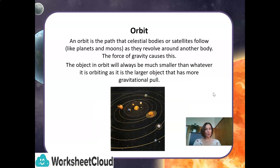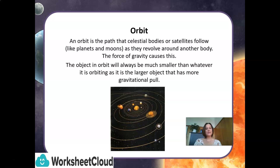What is an orbit? An orbit is the path that celestial bodies or satellites follow, like planets and moons, as they revolve around another body. The force of gravity causes this. The object in orbit will always be much smaller than whatever it is orbiting, as it is the larger object that has more gravitational pull.